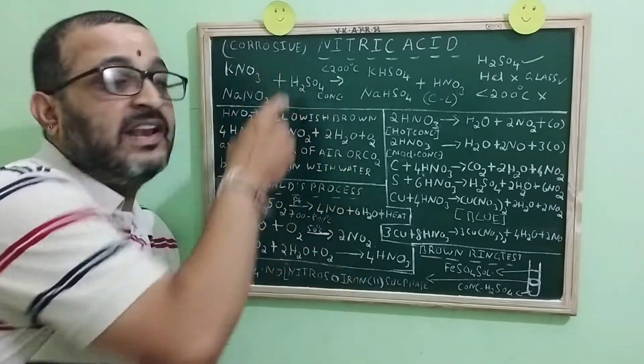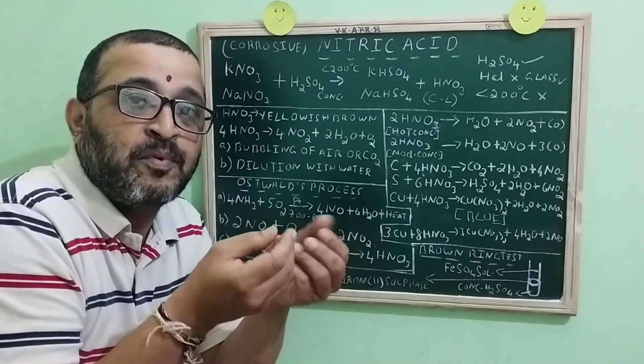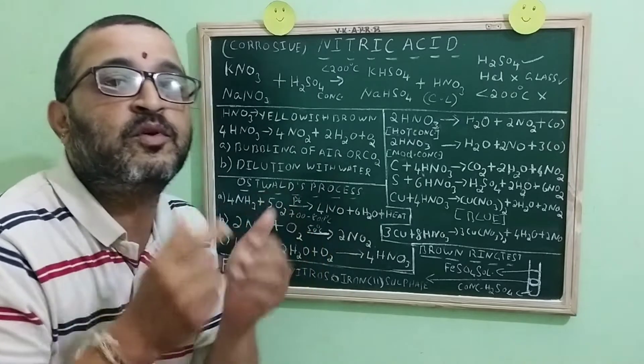Nitric acid is highly corrosive. So it reacts with the proteins of the skin to form a yellow color compound, xanthoproteic acid.